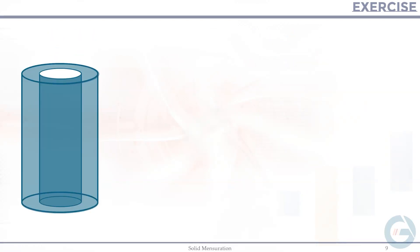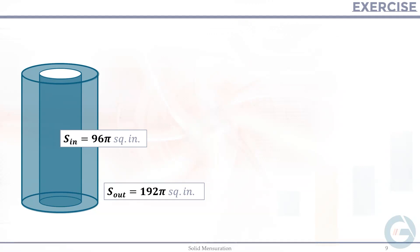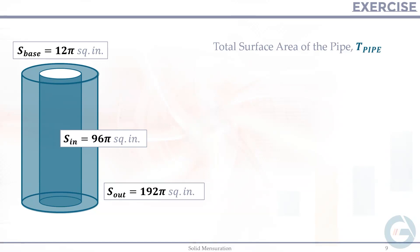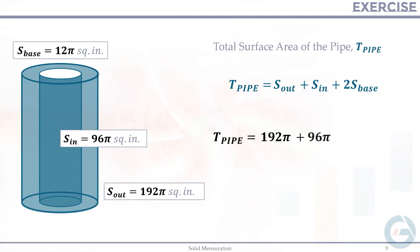We now have all three areas: the outer pipe gives 192π square inches, the inner pipe gives 96π square inches, and each base is 12π square inches. Since there are two bases, we multiply by 2. The total surface area of the pipe is 192π + 96π + 2(12π) = 312π square inches.